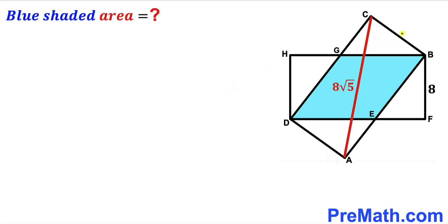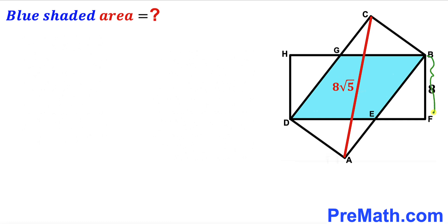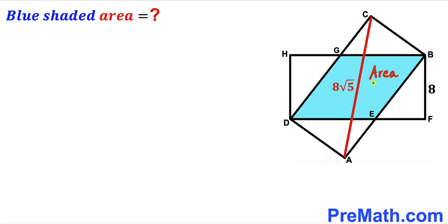Welcome to pre-math. In this video we have two identical rectangles put together as shown in the diagram, and as a result we get the blue shaded parallelogram DEBG. The width of this rectangle is 8 units and the diagonal AC is 8 times square root of 5 units. Our task is to calculate the area of this blue shaded region.